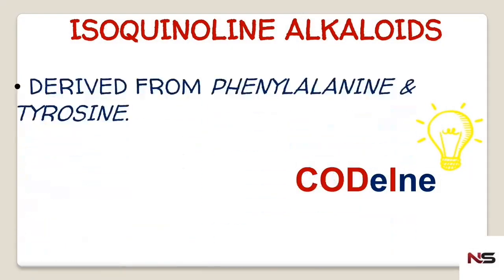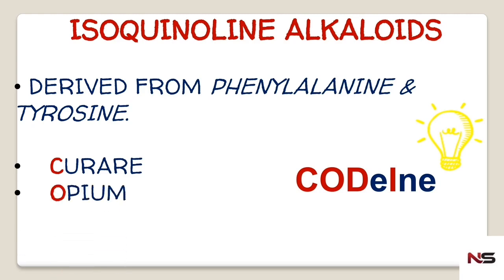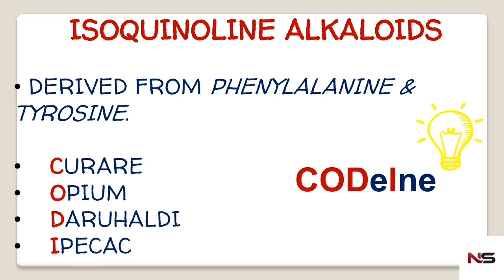Isoquinoline alkaloids are derived from phenylalanine and tyrosine. The drugs coming under isoquinoline alkaloids are Curare, Opium, Daruhaldi, and Ipecac. These are very important in this class.